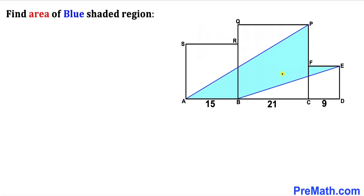We know we are dealing with squares, so if the side length of the medium square is 15, then all its sides are 15. For the large square the side length is 21, so all its sides are 21. And for the small square the side length is 9, so all its other sides are 9 units as well.